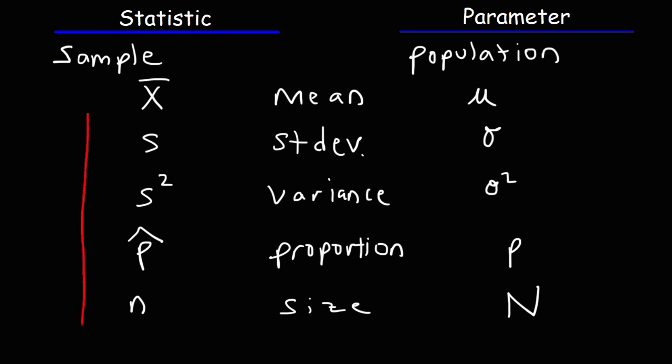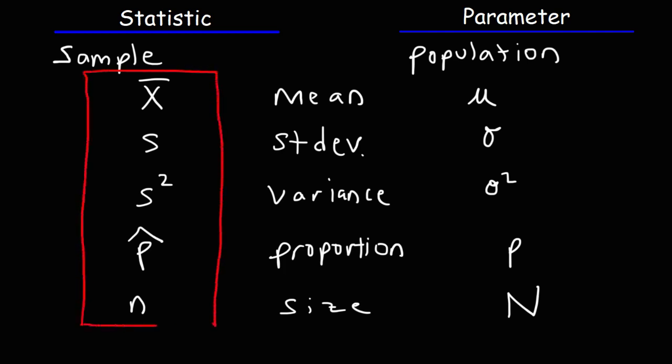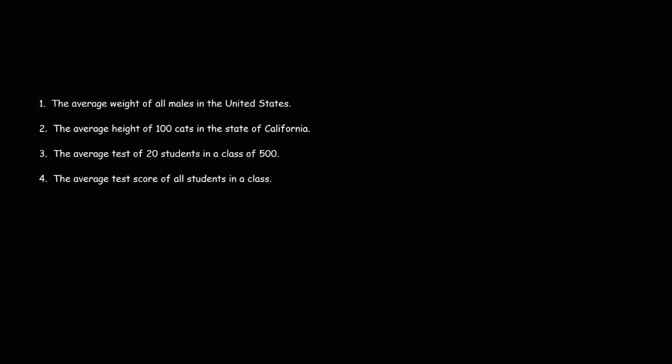Hopefully those symbols help you see the difference between a statistic and a parameter. Let's take a brief quiz. For each of these statements, determine if it describes a statistic or a parameter. Number one: the average weight of all males in the United States. A parameter describes everyone in the group, so since we're dealing with all males in the U.S., that is a parameter.